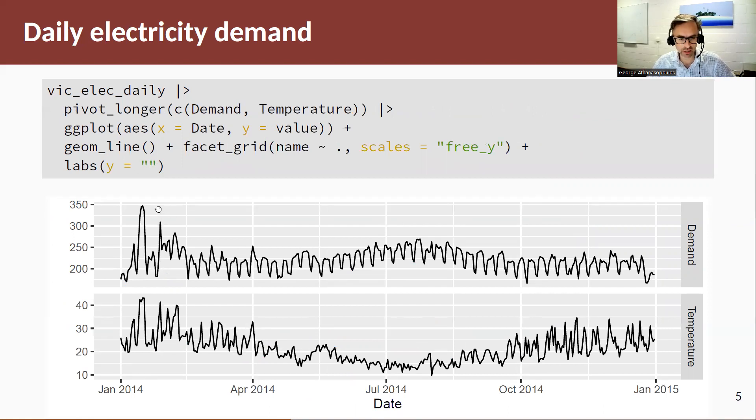Electricity demand in January—now remember in Australia, January, February are the summer months—much more variable electricity demand, and that is highly driven by higher temperatures, variability in temperatures. So you can see here, this day is a 40 plus day and electricity demand spikes on that day for air conditioning requirements to cool down.